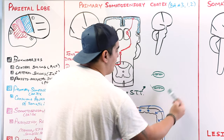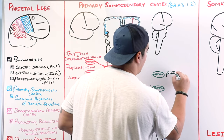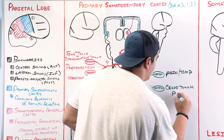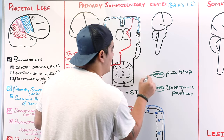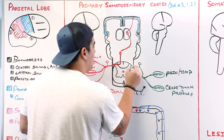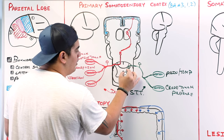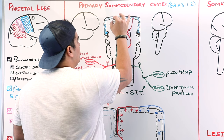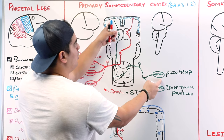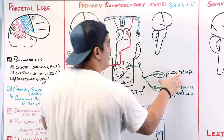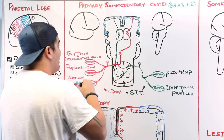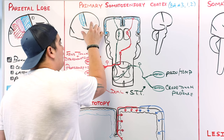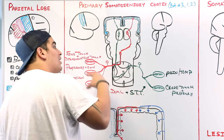The spinothalamic tract carries pain, temperature, crude or light touch, and pressure sensations. These are carried via spinal nerves into the spinal cord and posterior gray horn. Ultimately, the primary somatosensory cortex is responsible for conscious awareness of somatic sensations via these pathways from the contralateral side of the body.